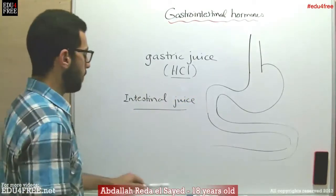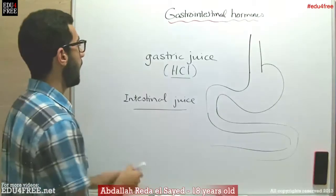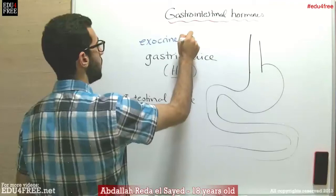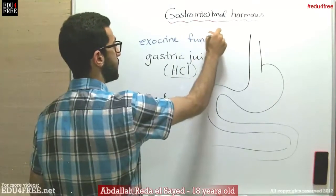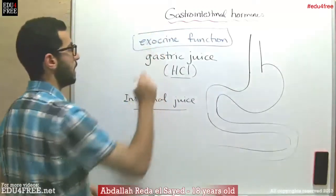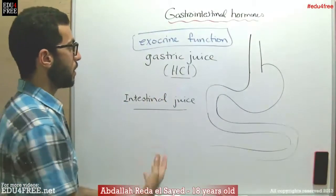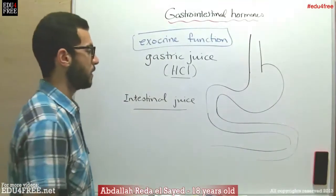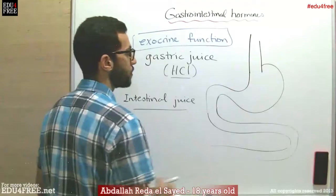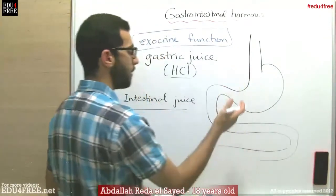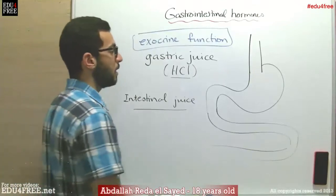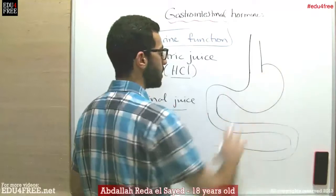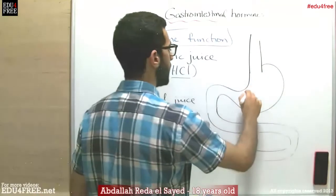We can call this an exocrine function, because these secretions are secreted through ducts. Also, the gastrointestinal region has an endocrine function, so there are hormones produced inside the stomach and the intestines. The hormone produced in the gastric region, which is the region of the stomach, is called gastrin.